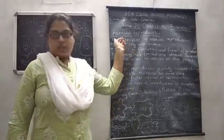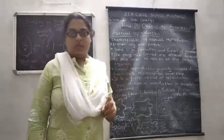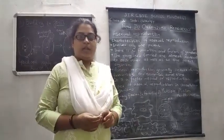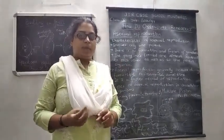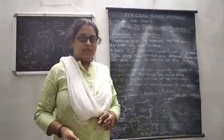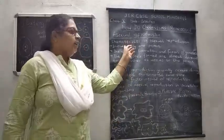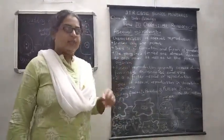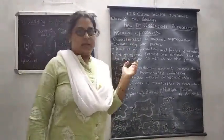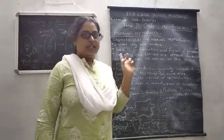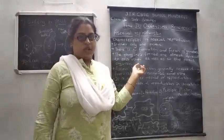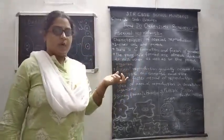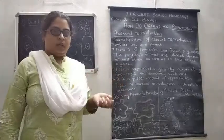Today you will be learning about asexual reproduction in unicellular organisms. Before that, let's look at some characteristics of asexual reproduction — that is, how the organism will form a new individual.